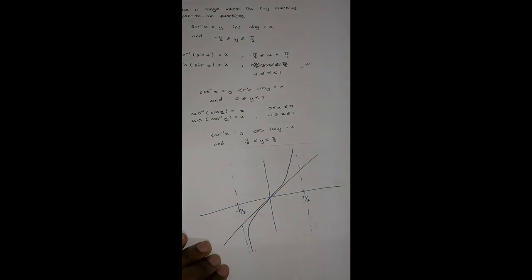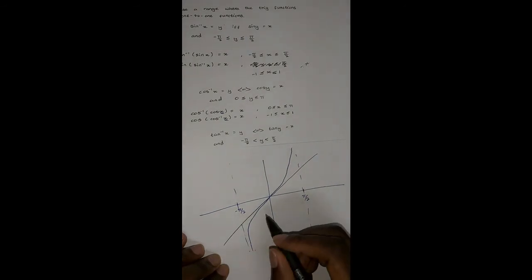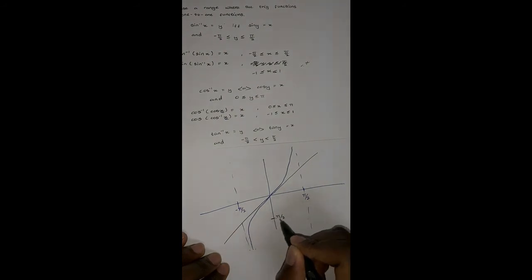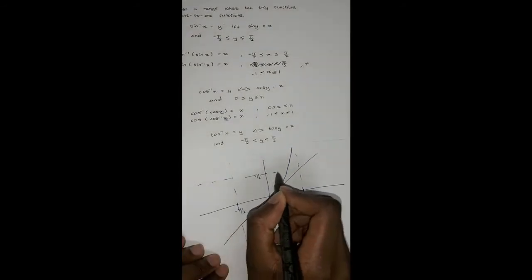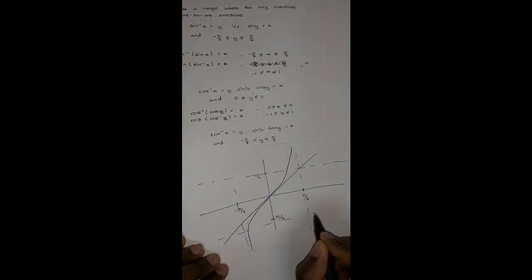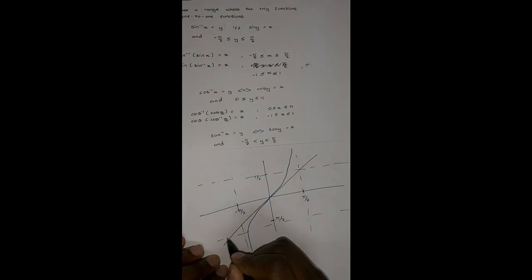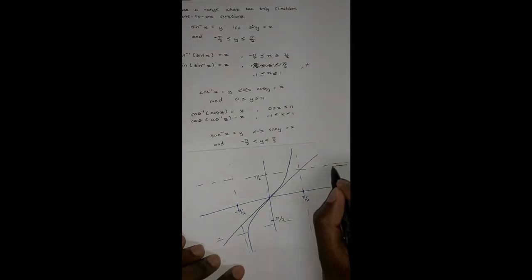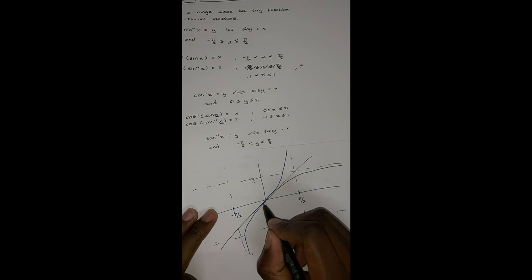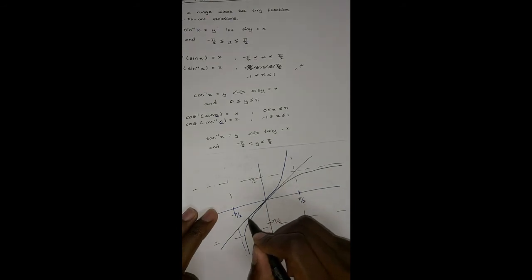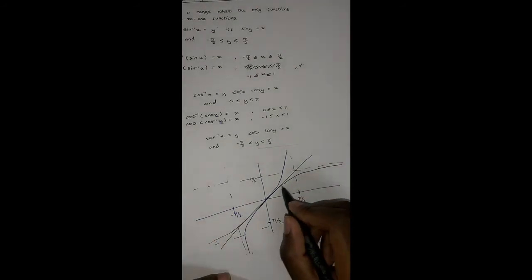After reflecting about the y equals x line, we have negative pi over 2 and pi over 2 marked as horizontal asymptotes for the arctan graph. The arctan graph runs from side to side approaching those asymptote values. The black curve going like that is y equals arctan(x). Those are the two graphs of tan and arctan.